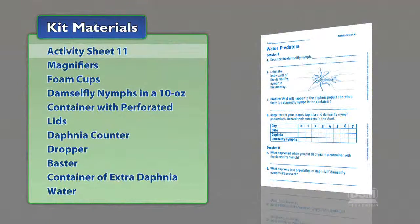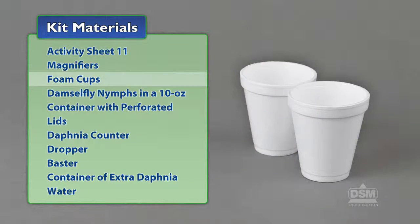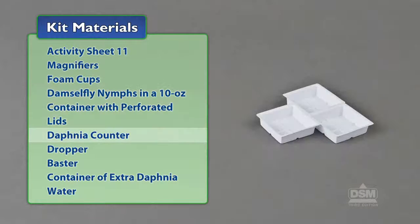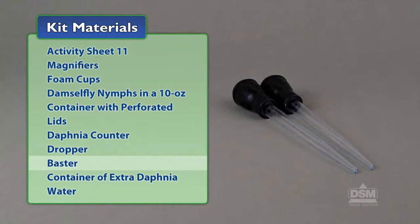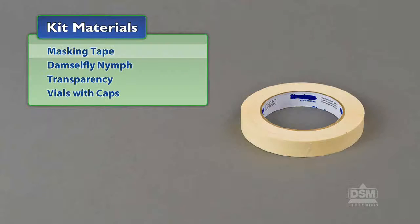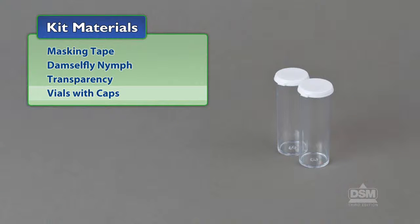You will need the following materials from the kit: Activity Sheet 11, magnifiers, foam cups, damselfly nymphs in a 10-ounce container with perforated lids, daphnia counter, dropper, baster, container of extra daphnia water, masking tape, damselfly nymph transparency, and vials with caps.